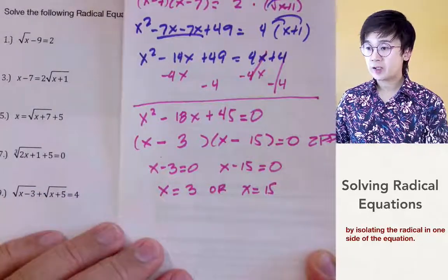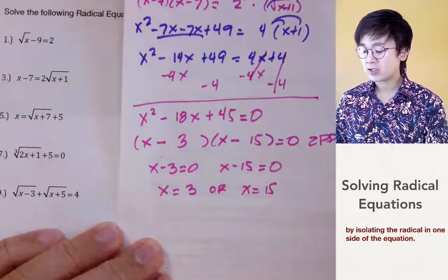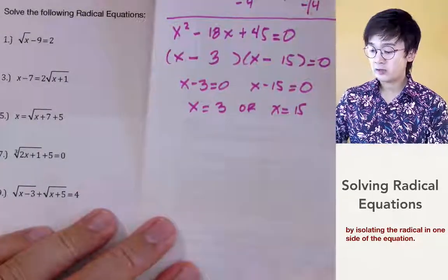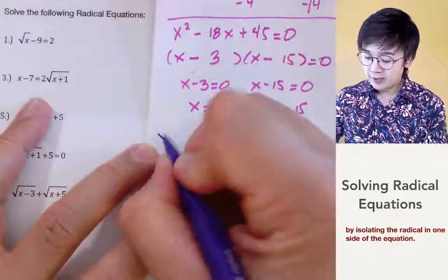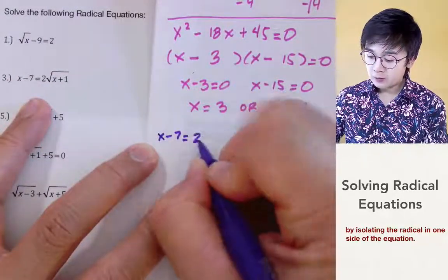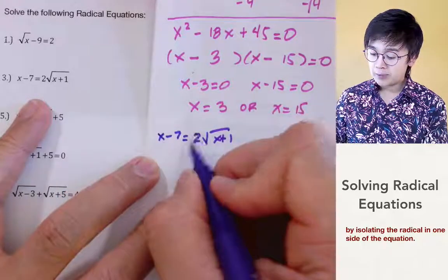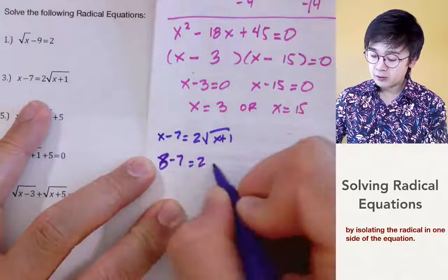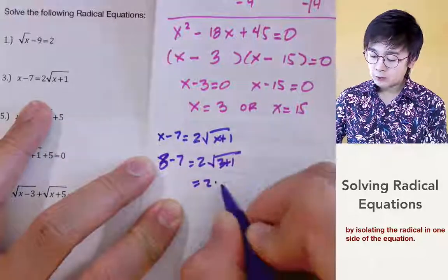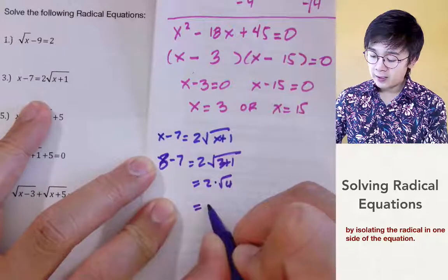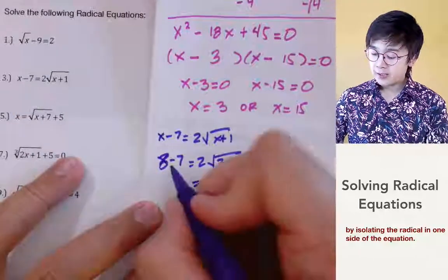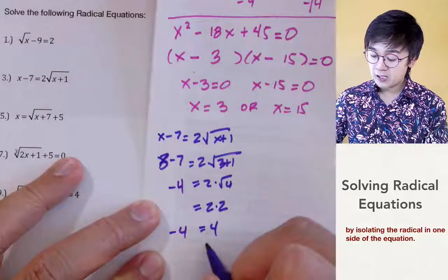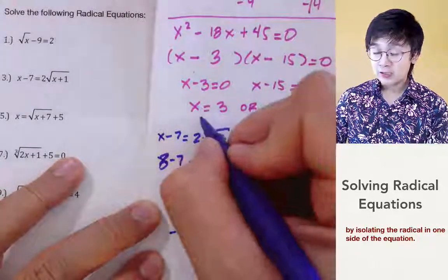We need to verify if both solutions or only one is valid. For x equal to 3 in problem number 3: we have 3 minus 7 equals 2 times square root of 2 times 3 plus 1, which gives negative 4 equals 2 times square root of 4 equals 2 times 2 equals 4. Since negative 4 is not equal to 4, x equal to 3 is not a solution.